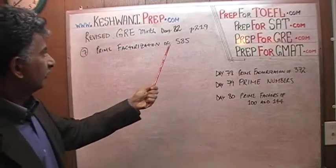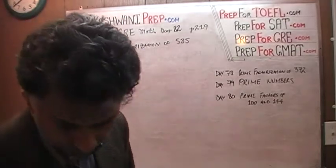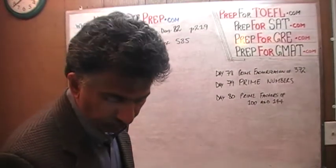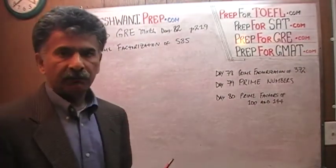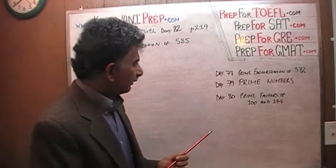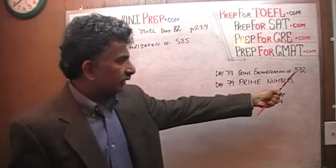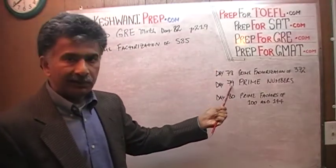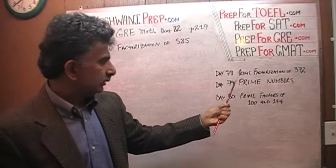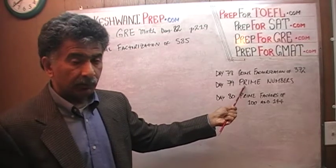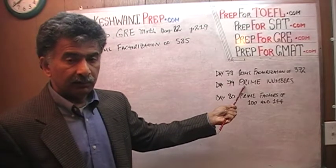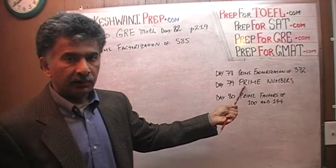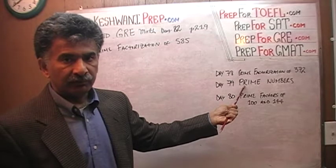They are asking us for prime factorization of 585. How do you find prime factors of a number? Well, this is not something new — we have been at it for the last 2-3 days. On day number 78, we did the prime factorization of 372, which is very similar to what we are going to do today. On the 79th video, I did not solve any problem at all. I spent the entire length of the video discussing the concept of prime factors and enumerating the prime factors from 1 to 100.